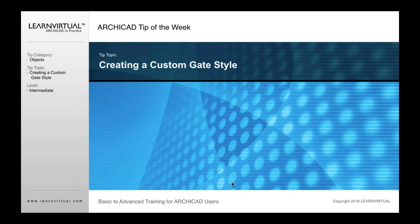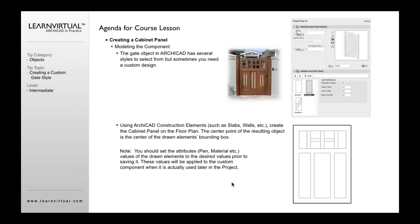Our tip of the week is how to create a custom gate style. If you're doing a design for a project where you have a custom gate of some sort, and you really want that to look different from what the defaults are — because in ARCHICAD there are really only two options to do a custom gate: a rectangular option and a curved option. That's really it. So if you want a design that looks like this, you're going to need to create a custom gate design.